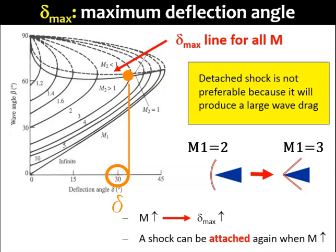Now, this delta max is bigger than the delta of the inclined surface. And we now have a clear solution of beta, where an oblique shock will form to deflect the incoming flow at 30 degrees.